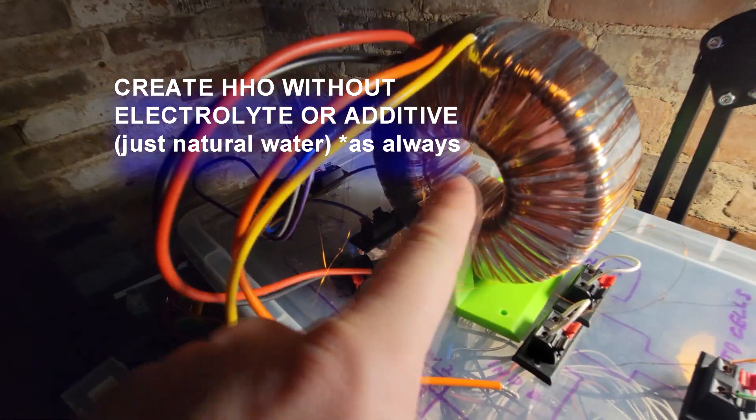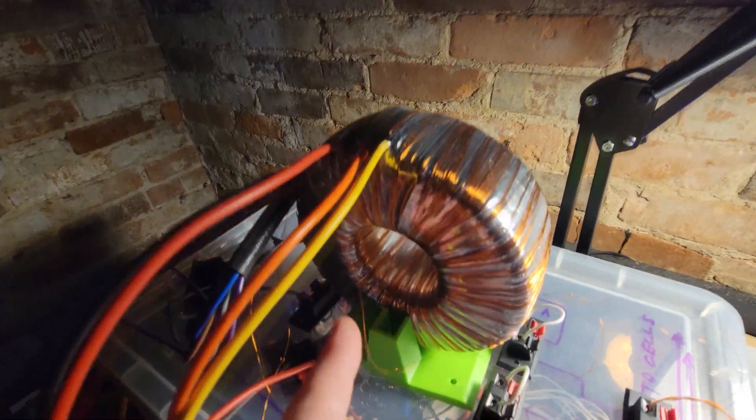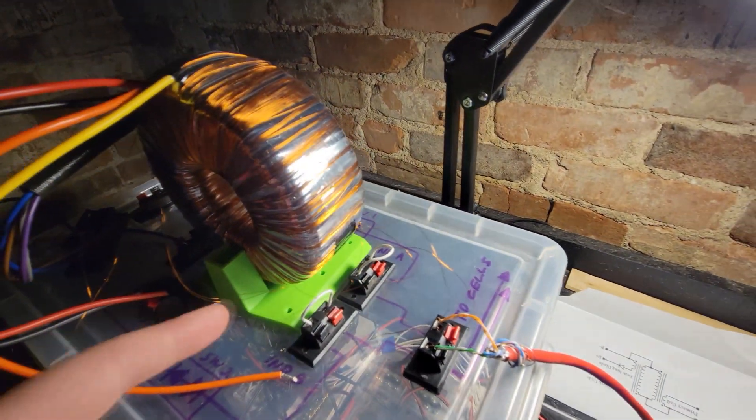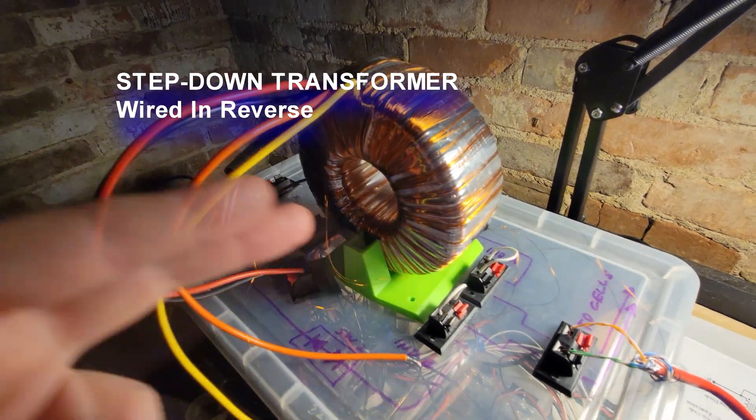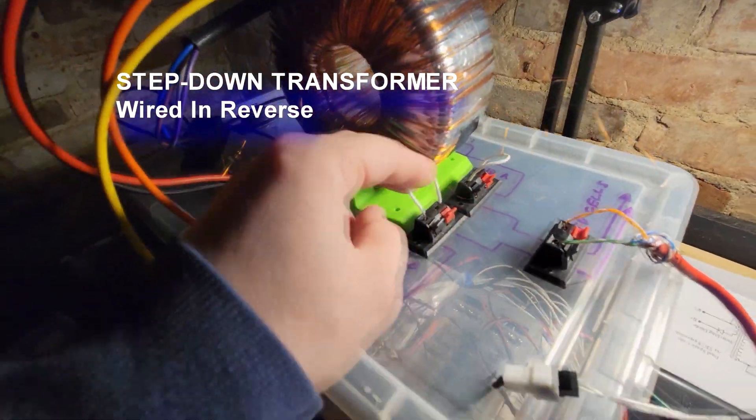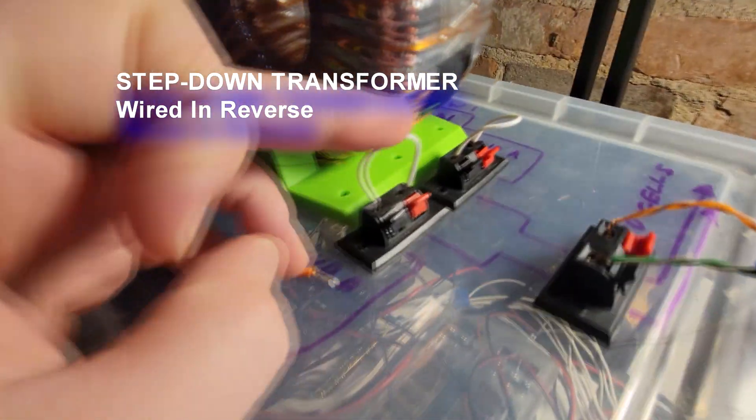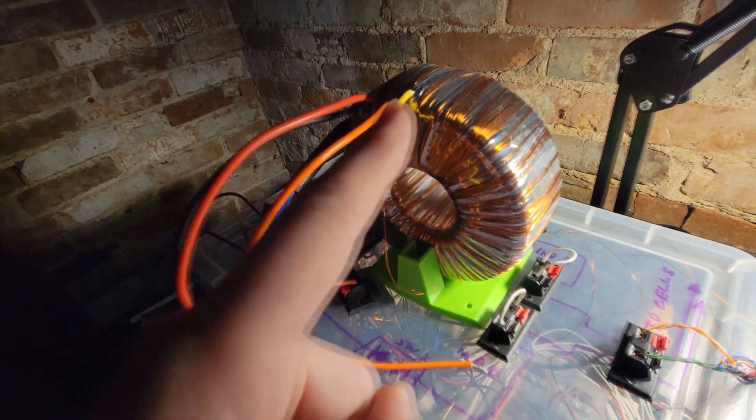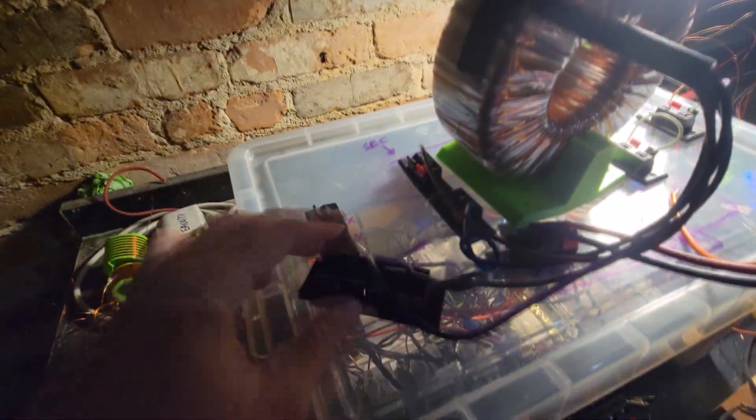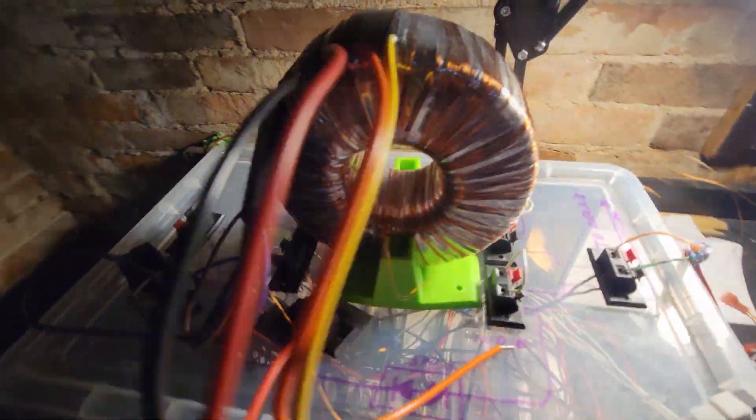This particular configuration, like my last video, uses two bi-filer round coils on a standard step-down transformer wired in reverse. Right now I have my inductors just bridged. There are no inductors. This is just straight primary and secondary center tap configuration.